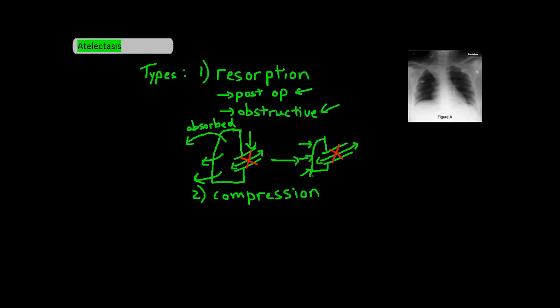In post-surgical atelectasis, the diaphragm is not functioning, leading to decreased air exchange or air coming into the lungs, and so the remaining air in the lung ends up getting reabsorbed into the body, leading to collapse of the lung. Now in obstructive atelectasis, there's something blocking the air from the lung, and the remaining air just gets reabsorbed into the body, again leading to collapse of the lung.